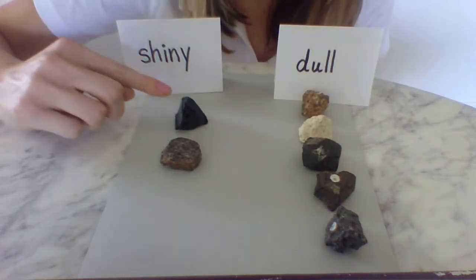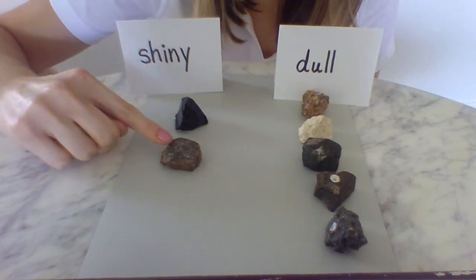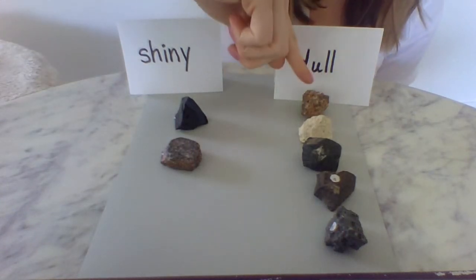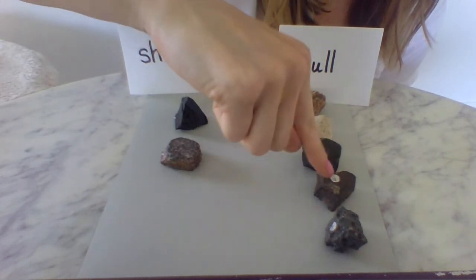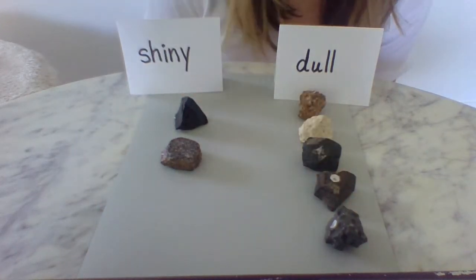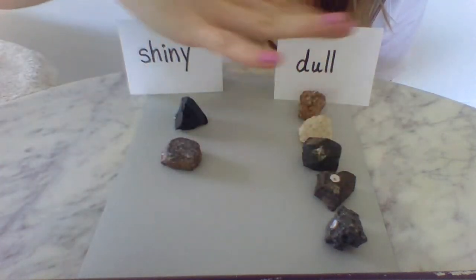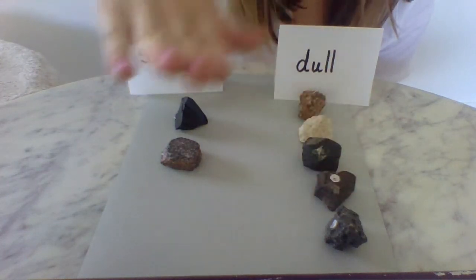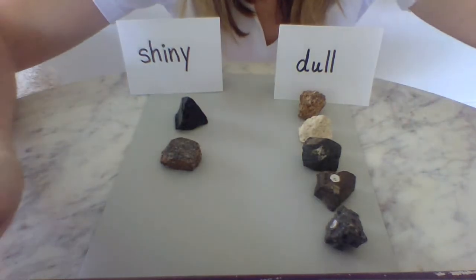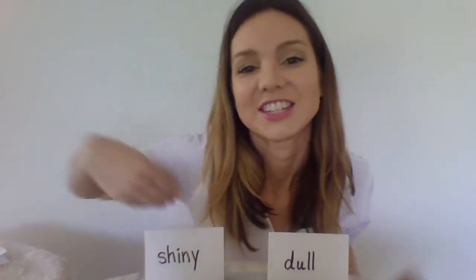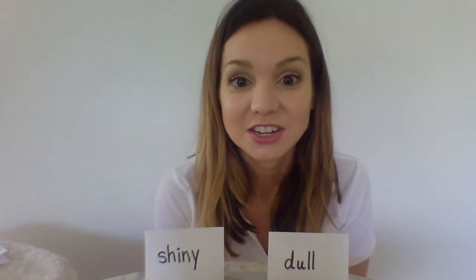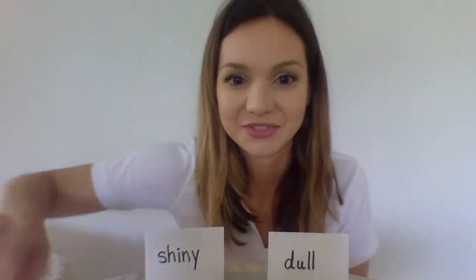Look how many rocks I have under shiny — two. Look how many rocks I have under dull — five. How many rocks do I have altogether? Seven. Five plus two is seven. So that's our categorization of shiny and dull. You can watch the next video for another type of categorization.